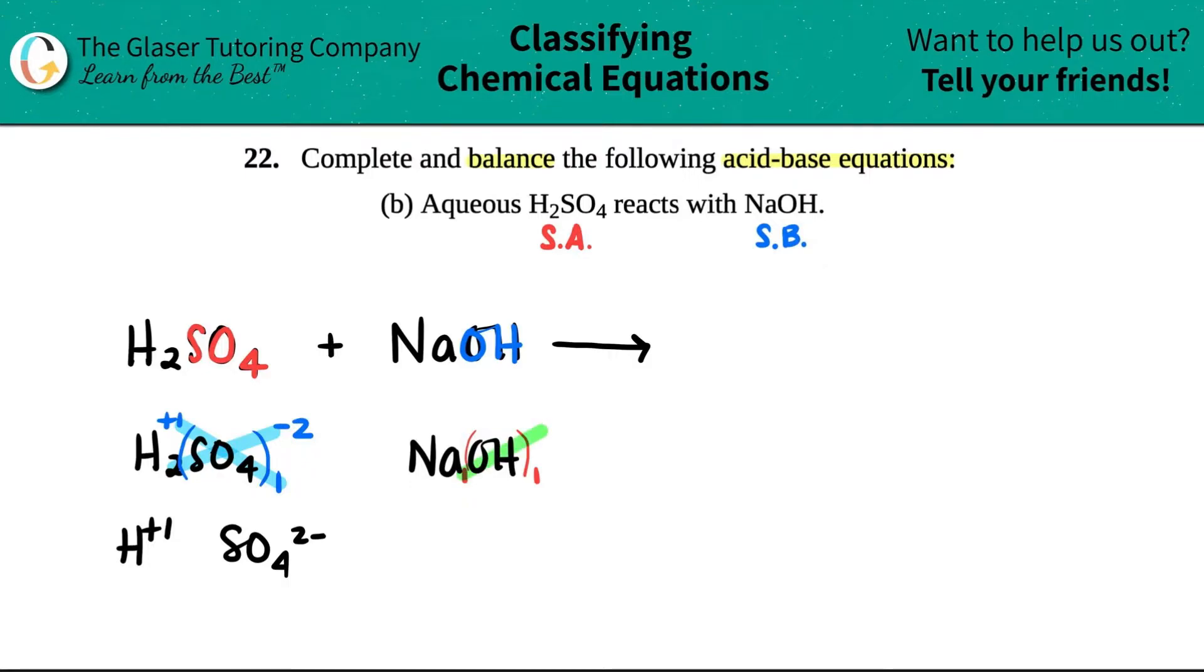Those are the subscripts that we're going to use to get the charges. This one crisscrossed up telling me that OH was a minus one. This one crisscrosses up telling me that sodium was a plus one. So I now have Na plus one and OH minus one.